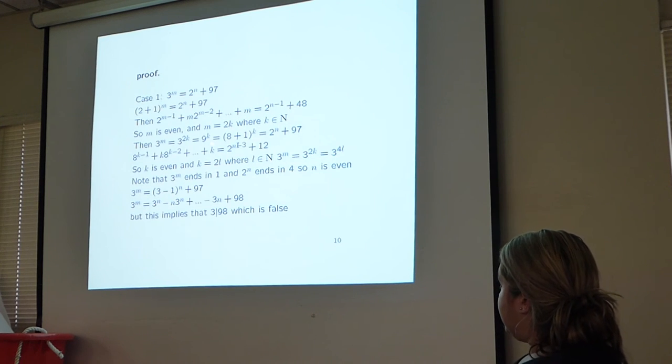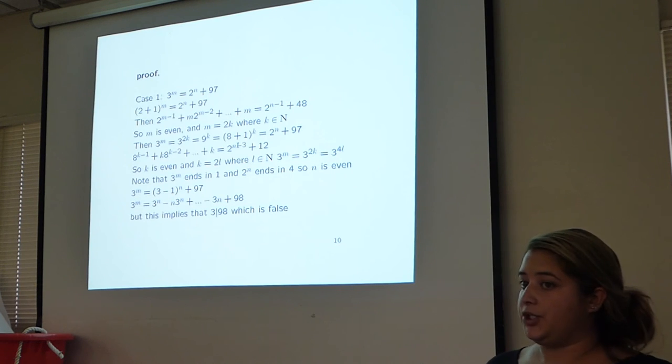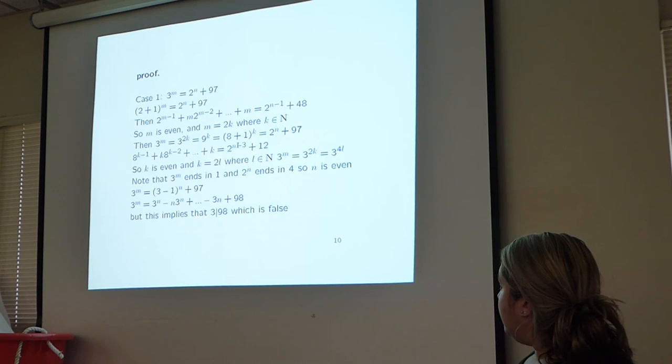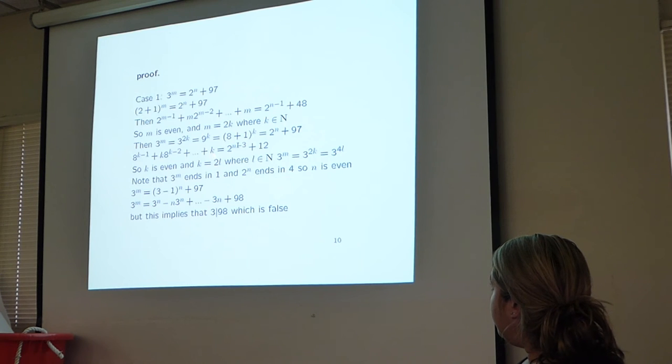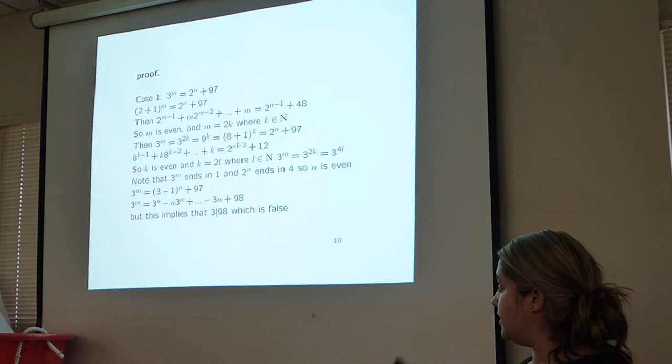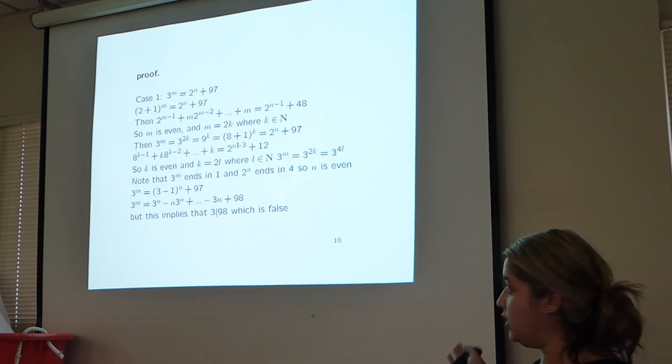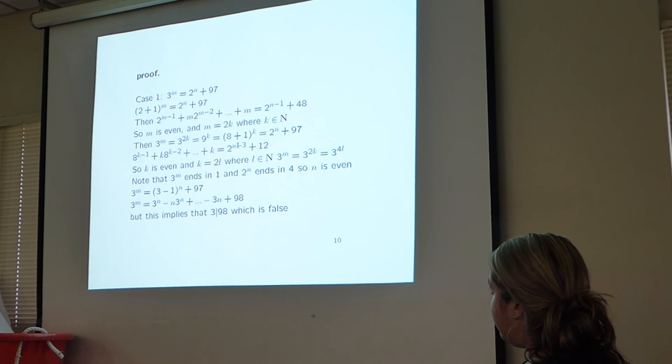Now we say that m is even, we write m as 2k, and we get (8+1)^k = 2^n + 97. We do binomial expansion again, and we get this lone k again. But we also can see that there is another factor of 2 in each of these terms. So we can also say that k is even. Then we write k as 2l.